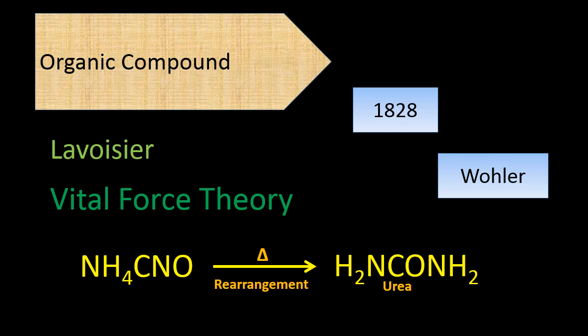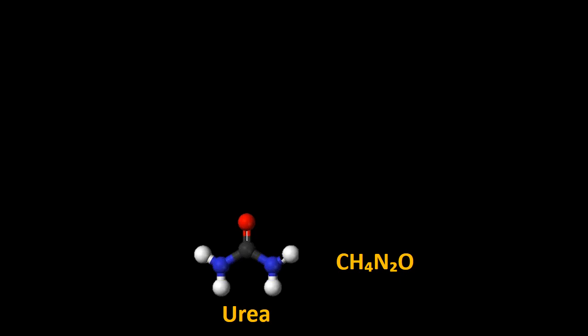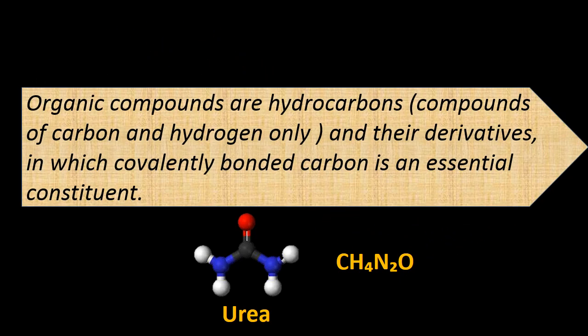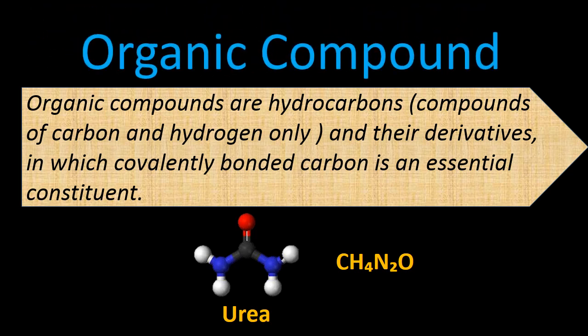Now we have to discuss the types by which we can write down organic compounds. According to the modern definition, organic compounds are hydrocarbons — compounds of carbon and hydrogen — and their derivatives, in which covalently bonded carbon is an essential constituent.